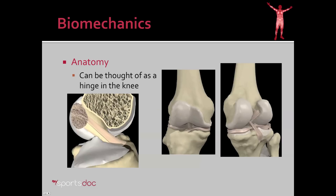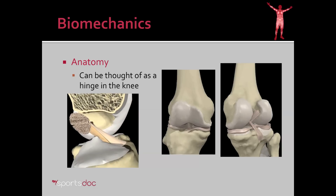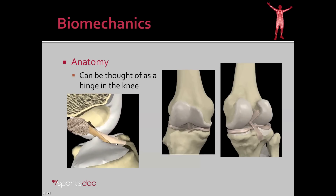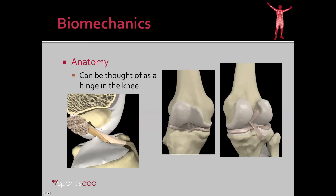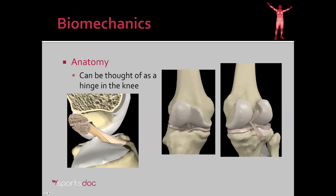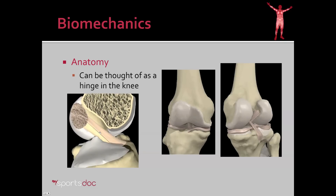You can also see the lateral meniscus and medial meniscus fairly well here. If you put that in motion and take away a portion of the knee, you can see what the ACL looks like through a range of motion. As the knee flexes, the tibia tries to slide forward, and the ACL is what prevents that.